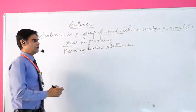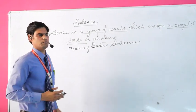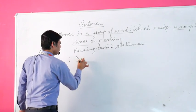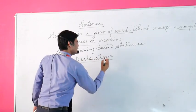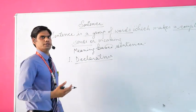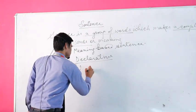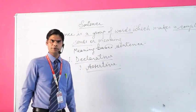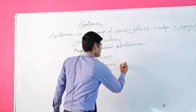Now, with sentences based on meaning, as we have studied, we will classify them, give examples, and make things clearer. The first type is declarative. A declarative sentence can be stated in two ways: the first one in a positive, affirmative, or assertive manner.